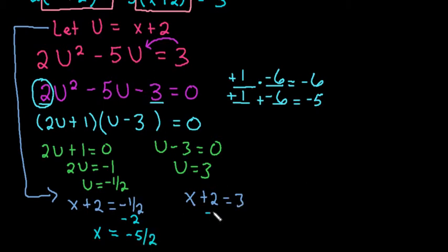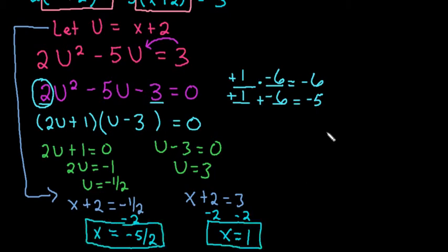For this one, when we subtract the 2, we end up with x equals 1. So remember that these are our possible solutions, x equals 1 and x equals negative 5 halves.